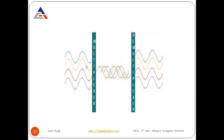Looking at the diagram, continuous waveforms with different colors represent different wavelengths. Four wavelengths are sent from the sender side, combined into a single unit with the help of a multiplexer. When received at the receiver side, the demultiplexer separates all signals and sends them to their desired stations. This concludes the topic of multiplexing.